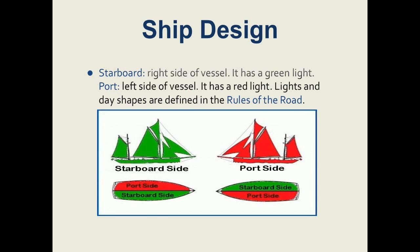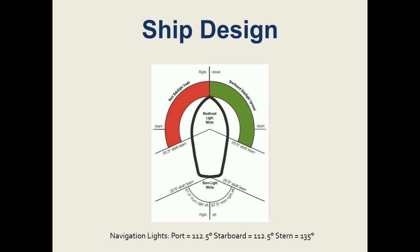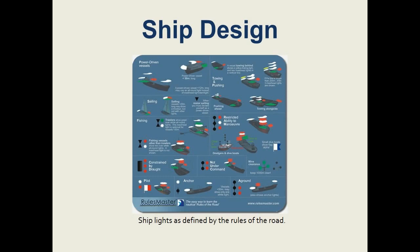The starboard side of the vessel is the right side, with a green navigational light. The port side of the vessel is the left side, with a red navigational light. Lights and day shapes are defined in the nautical rules of the road. Primary navigation lights: the masthead light has an arc of 225 degrees, the port light has an arc of 112.5 degrees, the starboard light has an arc of 112.5 degrees, and the stern light has an arc of 135 degrees. These lighting configurations as defined by the nautical rules of the road must be designed onto each type of vessel.